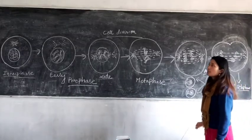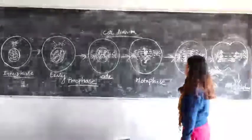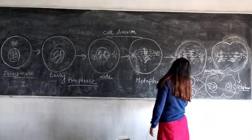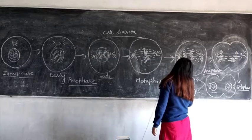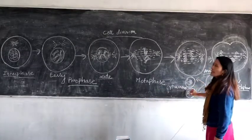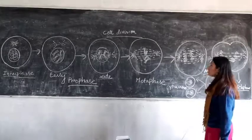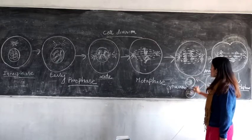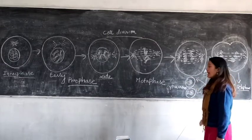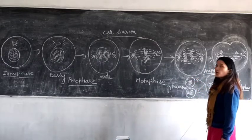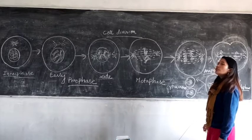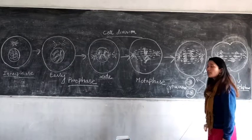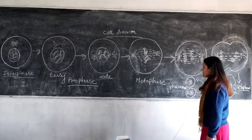Then comes the next stage of cell division, that is cytokinesis. In cytokinesis, daughter cells are formed from the parent cell. In mitosis, the chromosome number remains the same. You can also see that the chromosomes revert back to their thread-like chromatin fiber form. That is the characteristic feature of cytokinesis.